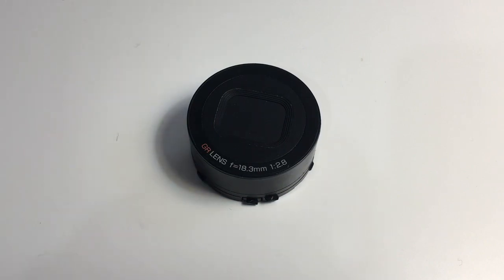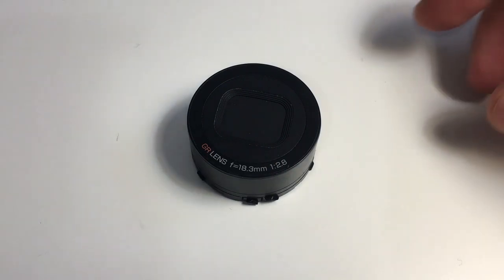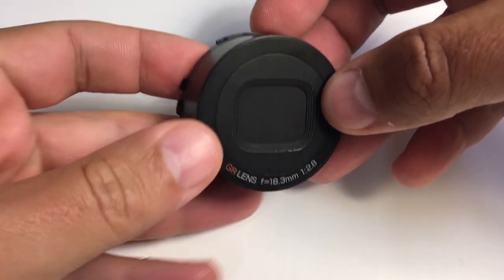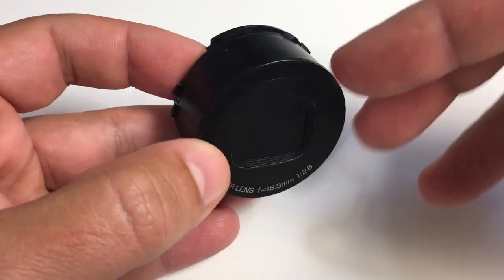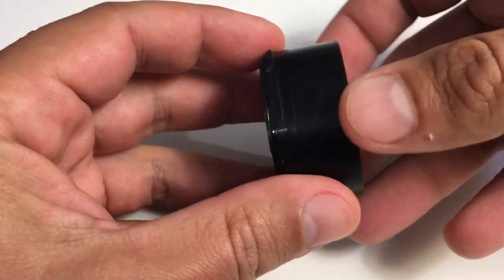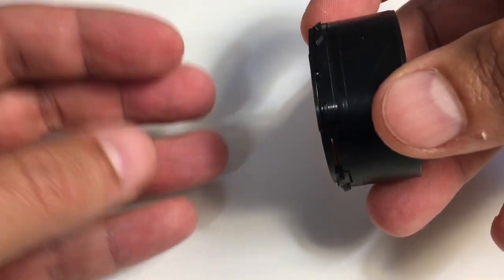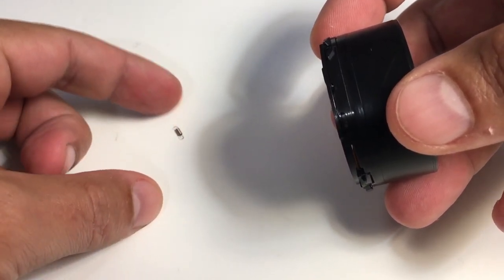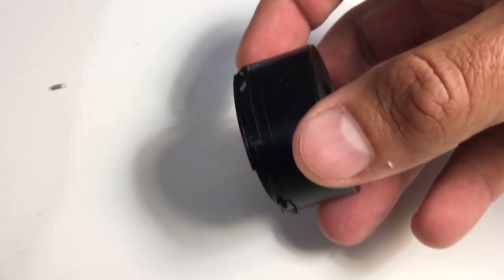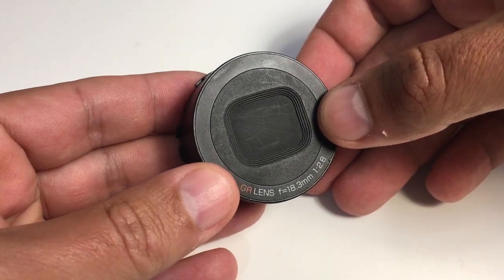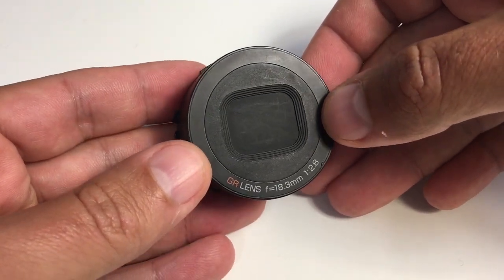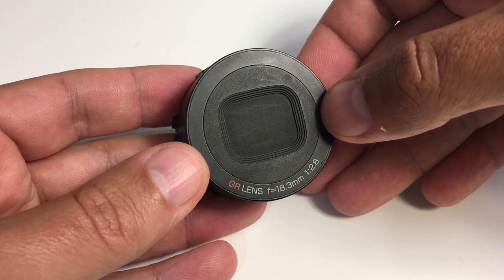This is a follow-up video for the first Ricoh GR disassembly video I did, about how to get inside the lens module. In the first video, I pulled out the lens module from behind, from the back, and I lost a tiny spring that fell out. It was forced, clearly it was not the way to do it.